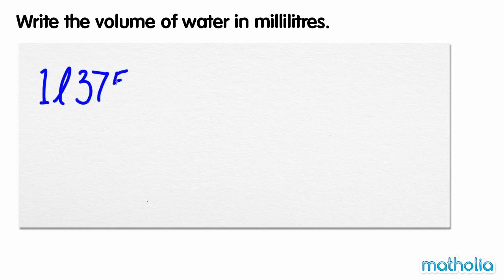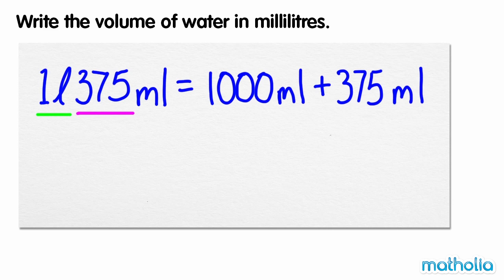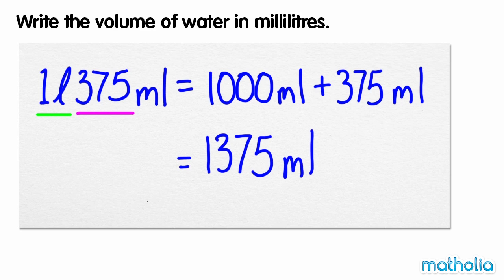We know that in 1 litre there are 1000 millilitres. So we can rewrite 1 litre 375 millilitres as 1000 millilitres plus 375 millilitres. 1000 plus 375 equals 1375. So the volume of water is 1375 millilitres.